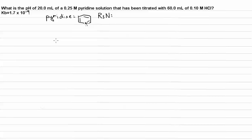Alright, in this video I'm going to be talking about what happens when you have a weak base solution. We have 20 mL of 0.25 molar pyridine and it's been titrated with 60 mL of 0.1 molar strong acid hydrochloric acid.